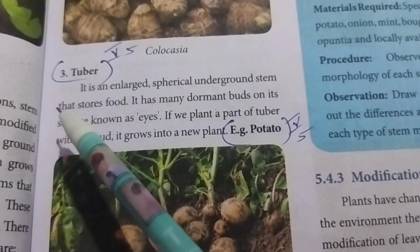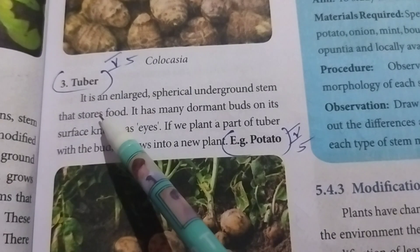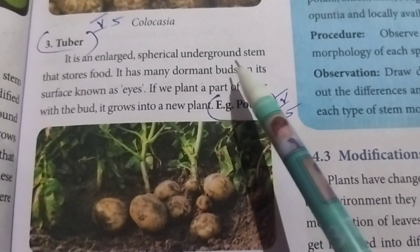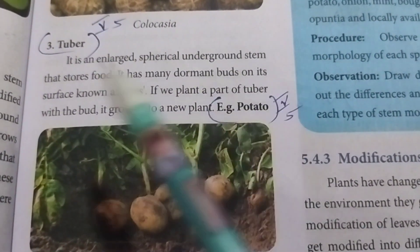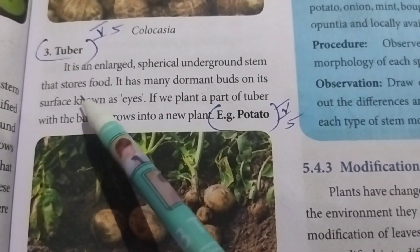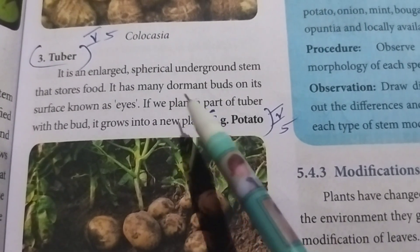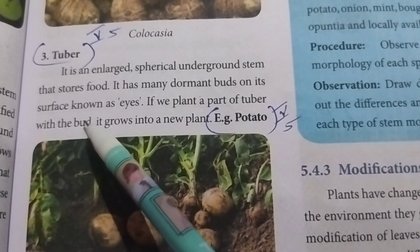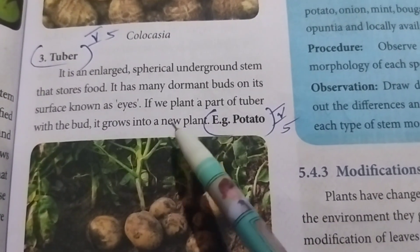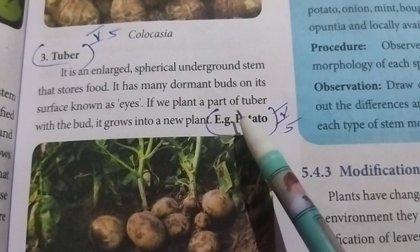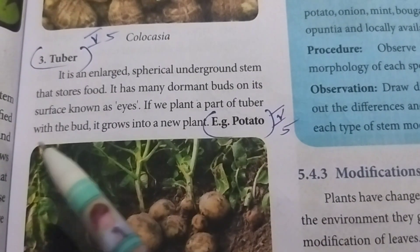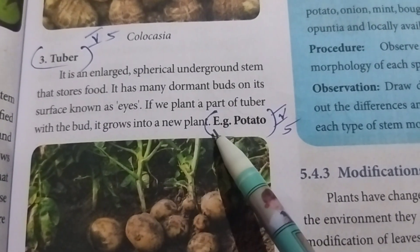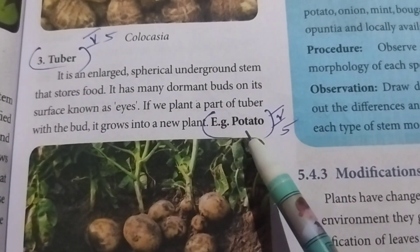Third one: Tuber. It is an enlarged spherical underground stem that stores food. It has many dormant buds on its surface known as eyes. If we plant a part of a tuber with a bud, it grows into a new plant. Example: potato.